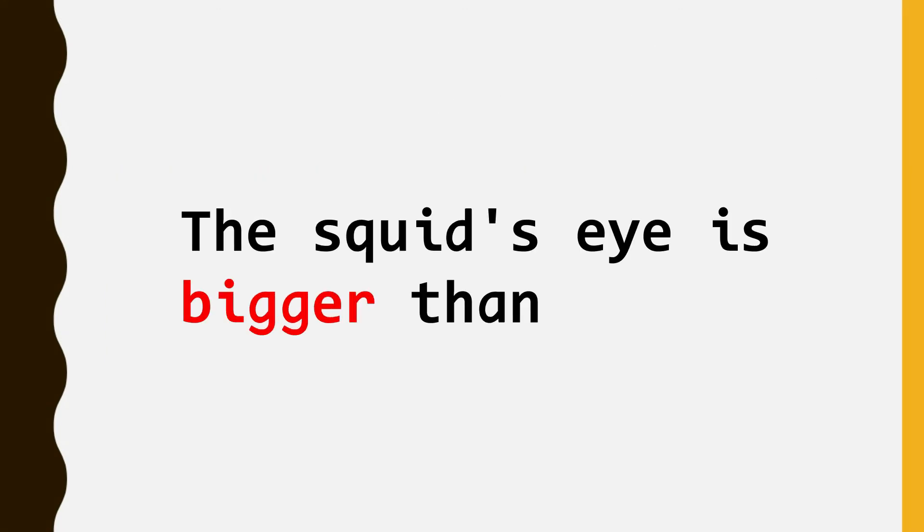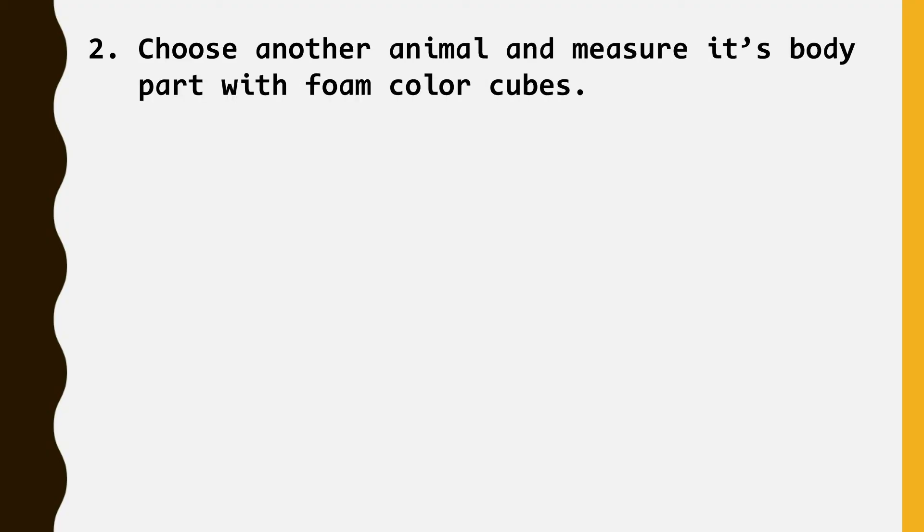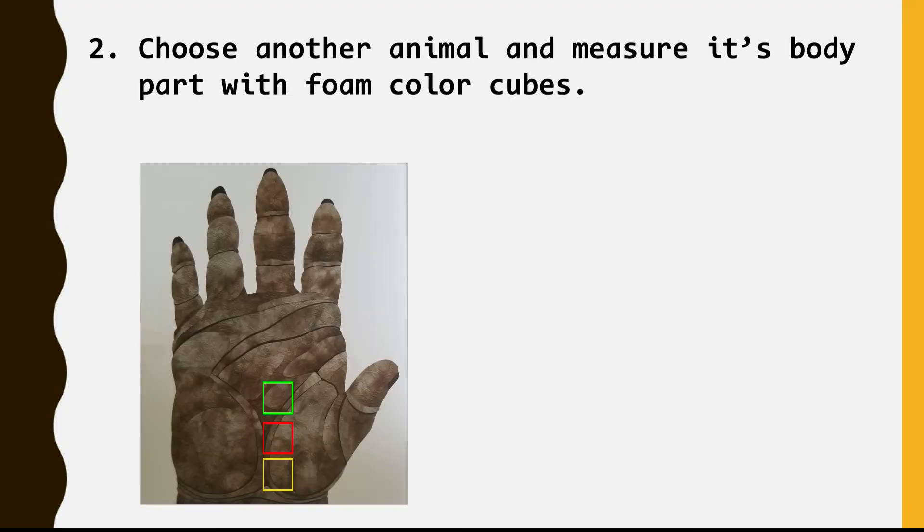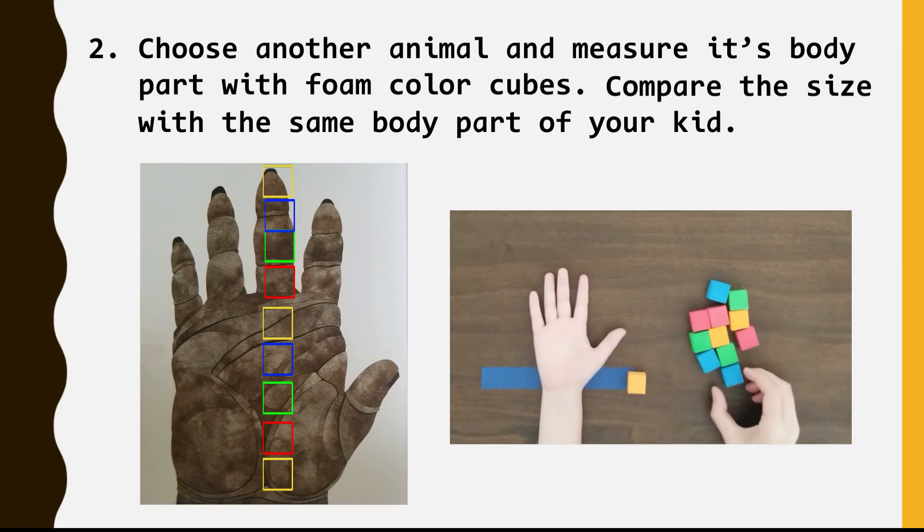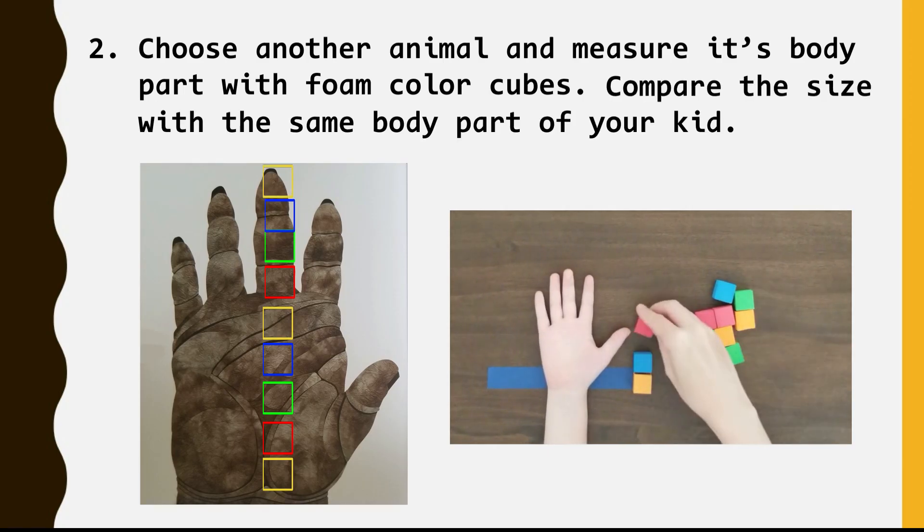When comparing the size, encourage kids to use measurement words such as bigger, smaller, shorter, or longer, and so on. Choose another animal and measure its body part with foam collar cubes this time. Compare the size with the same body part of your kid. In these two activities, children practice measuring objects using non-standard measuring units.